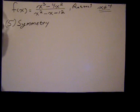And our next property is symmetry. When we're talking about symmetry in this respect, we're talking about symmetry with respect to the y-axis and symmetry with respect to the origin. We call that even symmetry if it's symmetric with respect to the y-axis. We call it odd symmetry if it's with respect to the origin.